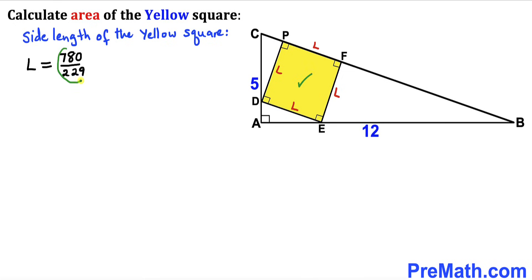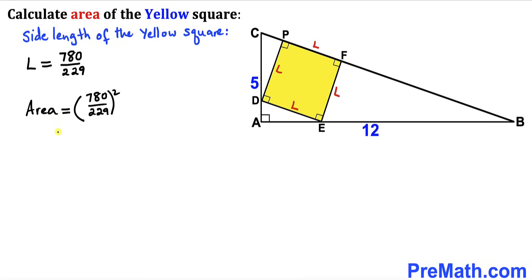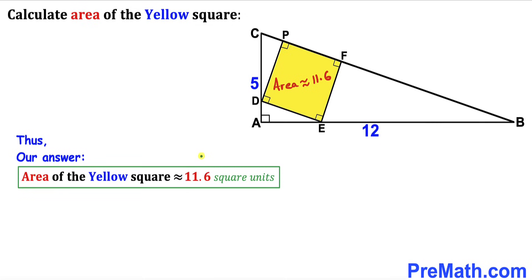Now let's recall the area of a square formula: Area = s², where s represents the side length. So the area of this yellow square is (780/229)². Taking care of the square, our area turns out to be approximately 11.6 square units. So the area of this yellow square is approximately 11.6 square units. Thanks for watching, and please don't forget to subscribe to my channel for more exciting videos. Bye!